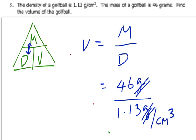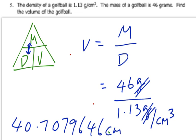After I do the division, I get this huge number. I got 40.7079646 centimeters cubed. And am I going to leave it like that? I hope not. We learned sig figs, we learned how to round to the lowest number of sig figs if we're doing a multiplication or division.